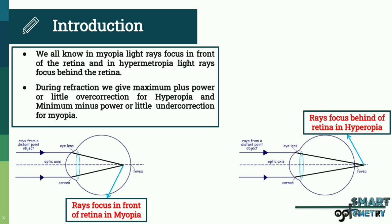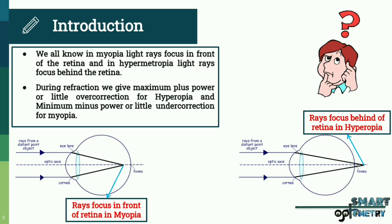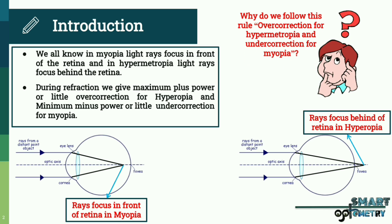During refraction, we give maximum plus power or a little overcorrection for hypermetropia, and minimum minus power or a little undercorrection for myopia. The question is: why do we follow this rule — overcorrection for hypermetropia and undercorrection for myopia?